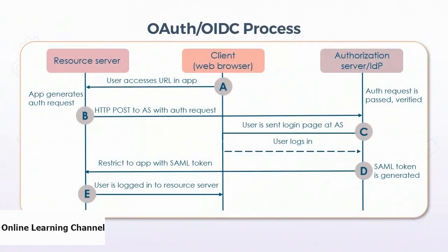In the OAuth/OIDC process, there are three components: the client on a web browser, the identity provider (authorization server), and the resource server (service provider). At step A, the client browser accesses a URL in the app; the resource server generates an auth request. At step B, it sends the auth request via HTTP POST to the authorization server, which verifies it. At step C, the user is sent a login page and logs in, generating a token. At step D, the resource server is told to restrict the app with the token. At step E, the user logs in to the resource server.